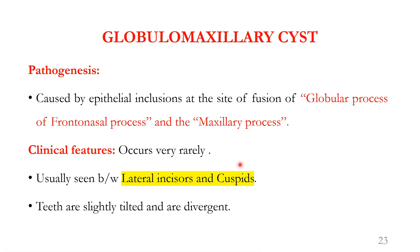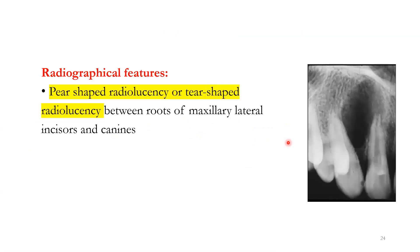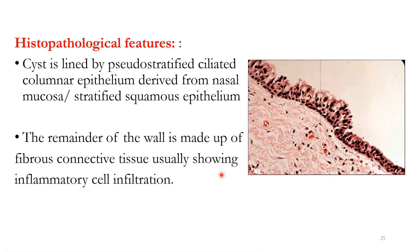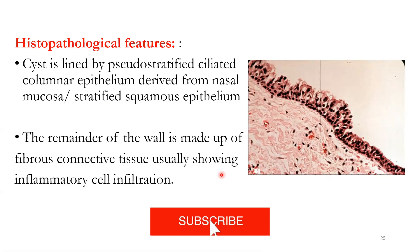The globulomaxillary cyst is caused by epithelial inclusion at the site of fusion of the globular process of the frontal nasal process and the maxillary process. It is usually seen between the lateral incisors and cuspids, and the teeth could be slightly tilted and divergent. The characteristic radiographic feature is a pear-shaped or teardrop-shaped radiolucency between the roots of the maxillary lateral incisor and the canine. Histopathologically, pseudostratified ciliated columnar epithelium when closer to respiratory epithelium, otherwise cuboidal epithelium.